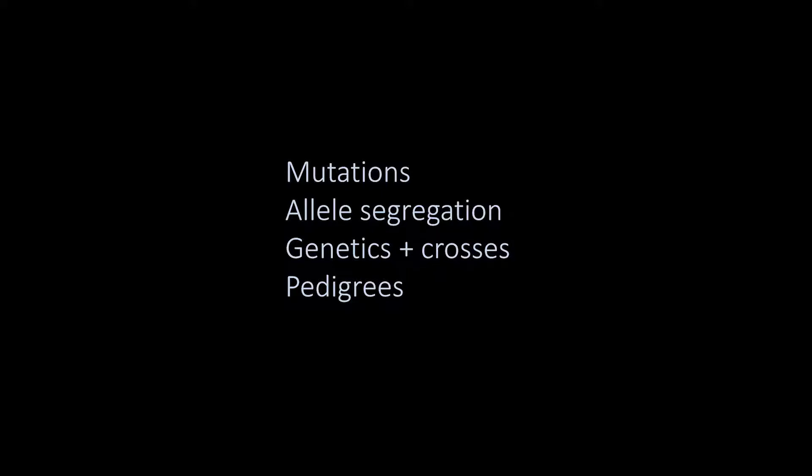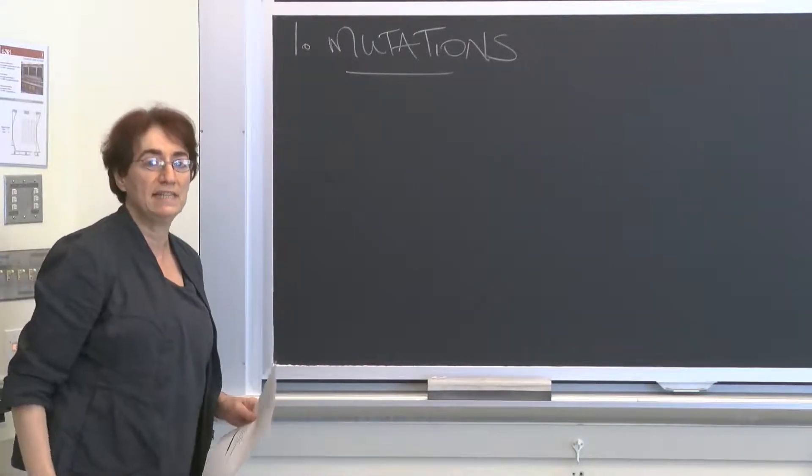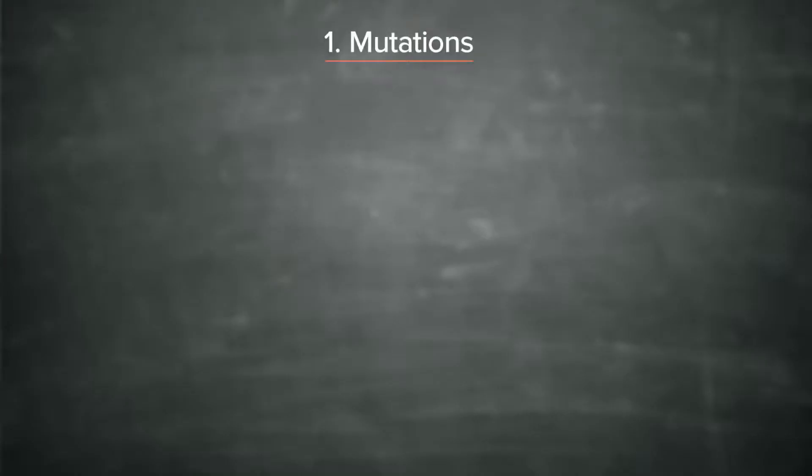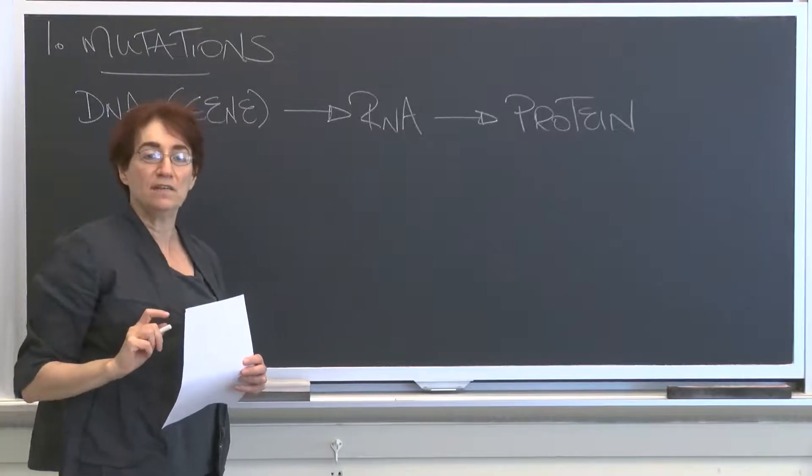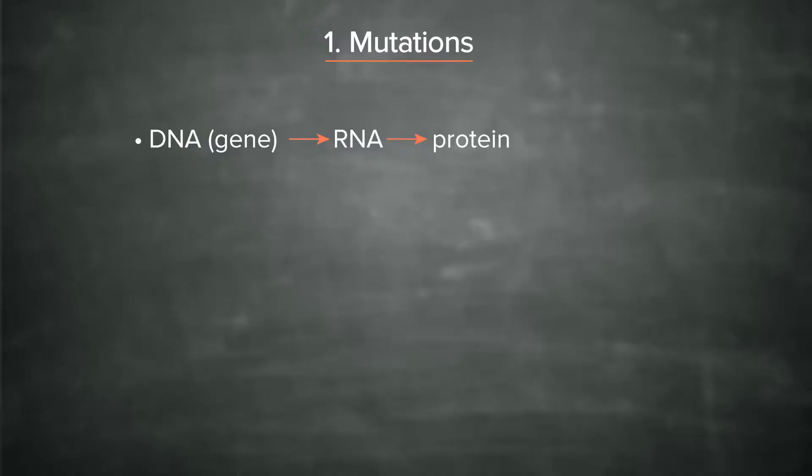Let's begin by talking about mutations. Let me start by reminding you what we talked about last time: the information flow from DNA to protein to a trait. DNA, the gene, is transcribed into RNA, which is then translated into protein. This is the information flow we talked about yesterday. That protein then has a function that may give an observable characteristic, which we call a trait. Let's write that down. A trait is something you can see, an observable characteristic, and the scientific term for that is phenotype.